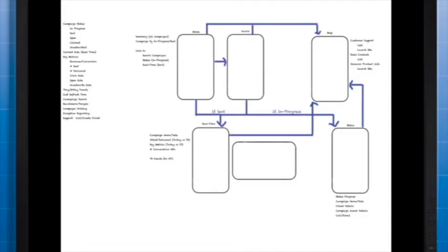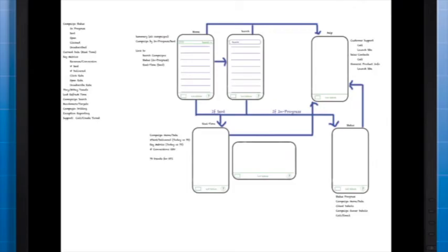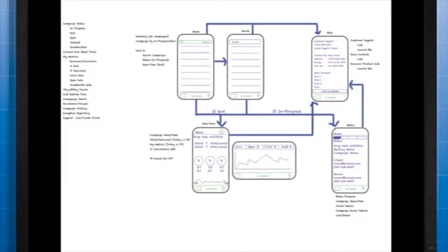Now that you know the primary function of each screen and how each one interacts with the others, you can start filling in the details of each screen. At this point in the process, you can start thinking about what controls and visualizations should be used. The intent is not to do detailed graphic design, but these diagrams should provide just enough information to give a sense of how much space each element on the screen should have. After completing the necessary iterations, document the proposed storyboard and store it in a place accessible by all members of the development team.